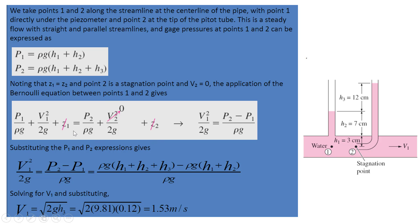The Bernoulli equation is P1 over gamma plus V1 squared over 2G plus Z1, equal to P2 over gamma plus V2 squared over 2G plus Z2. Since Z1 is equal to Z2, we can cancel them out — equal to zero. We already know that V2 at point 2 is at the tip of the Pitot tube, so V2 is equal to 0, as mentioned. Velocity at the Pitot tube tip equals 0.